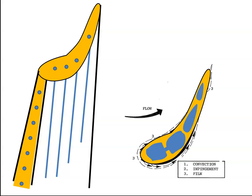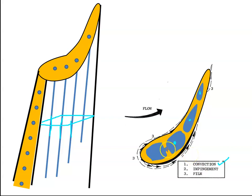Let's look at a section of the turbine blade. We can visualize the cool air coming up through these channels here. That cool airflow provides convection cooling. Then there are channels inside, and because the air is under high pressure, it shoots through a gap and hits this surface, causing it to cool — that's impingement cooling.